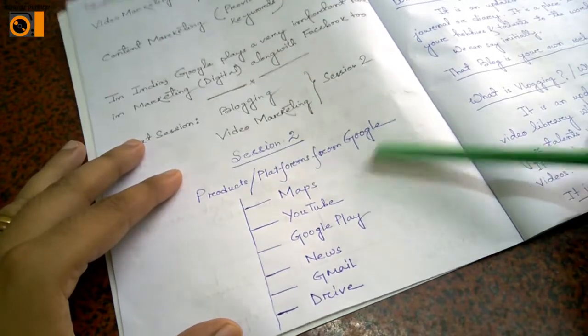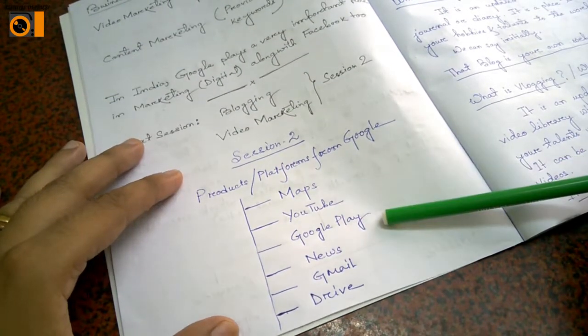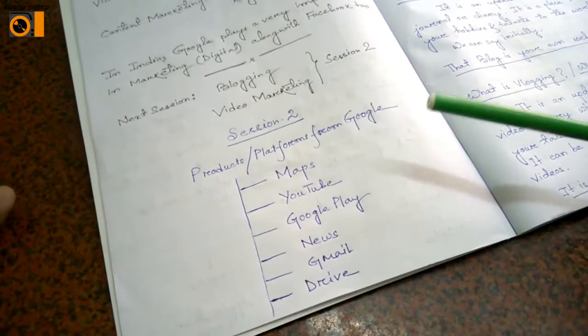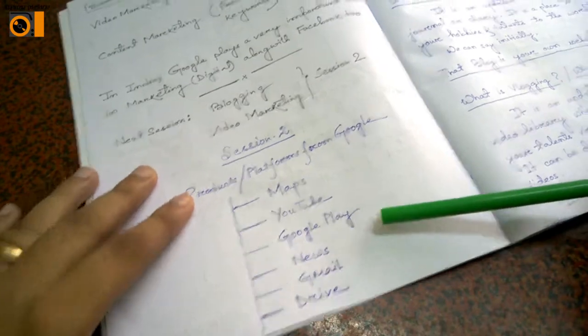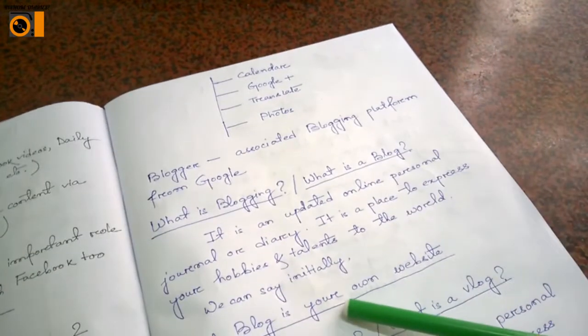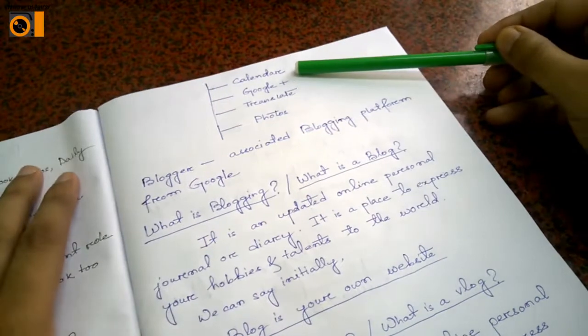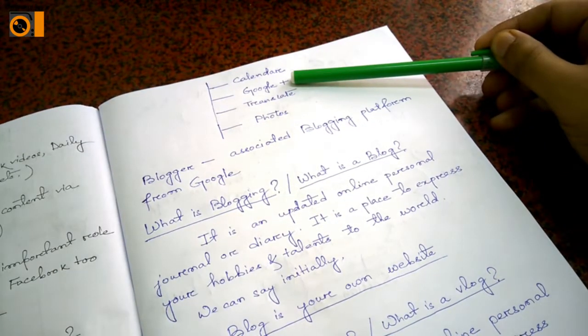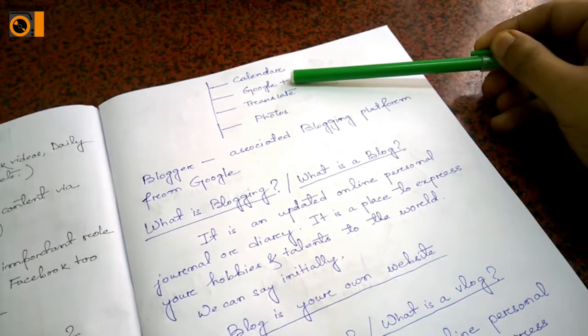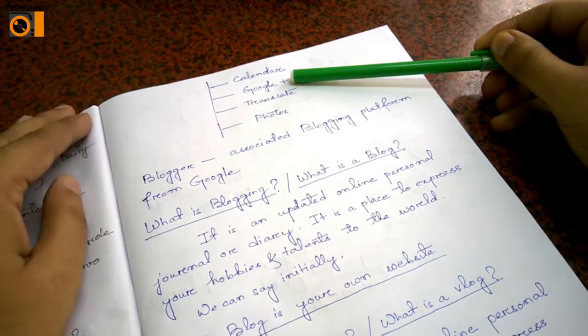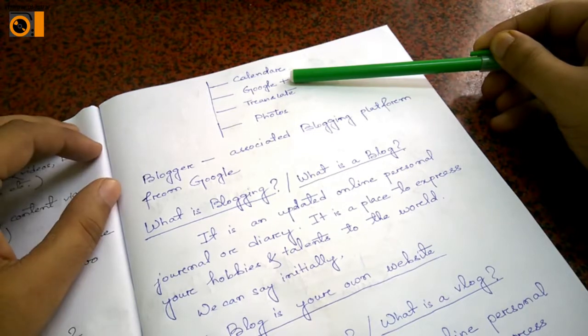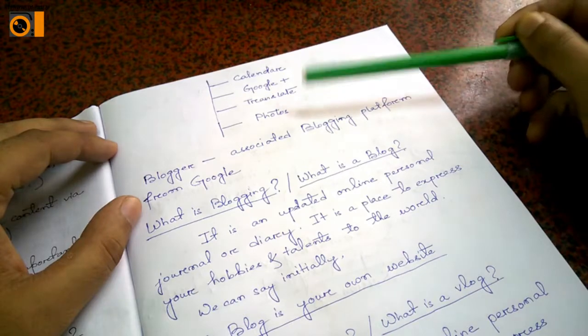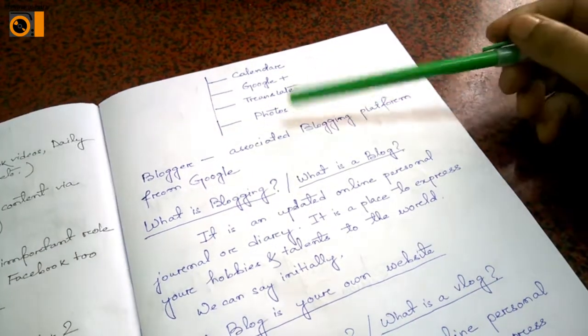The things are we can use Maps, YouTube, Google Play, the Play Store that we use, we can get Google News, we get Gmail account as you know, and we get Google Drive. Apart from that, we also get Calendar, Google Plus. Google Plus is a community site given by Google where you can interact with people - it's like a social media platform like Facebook.